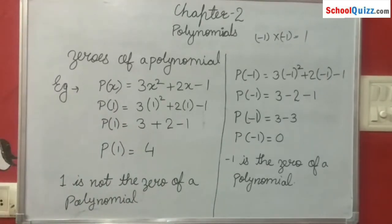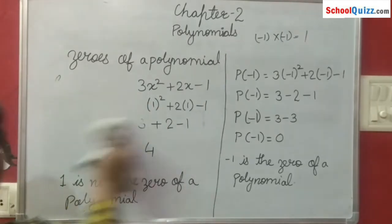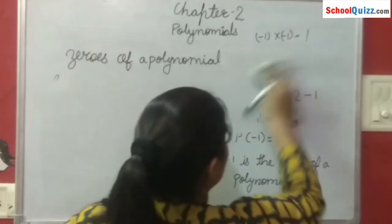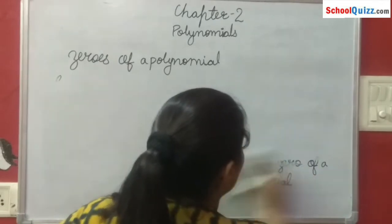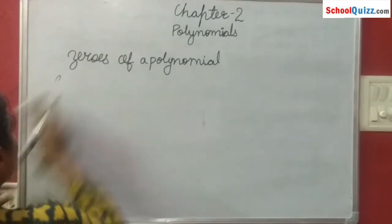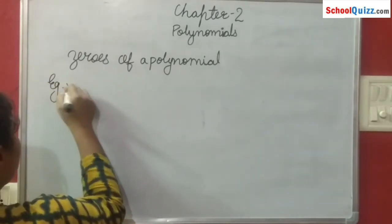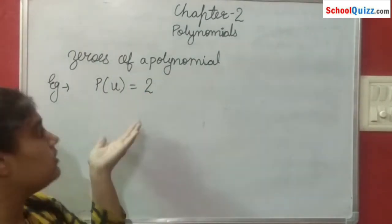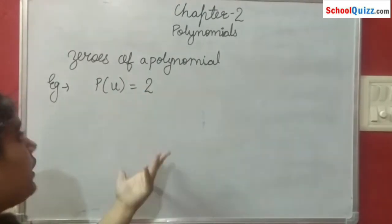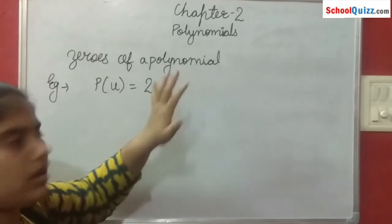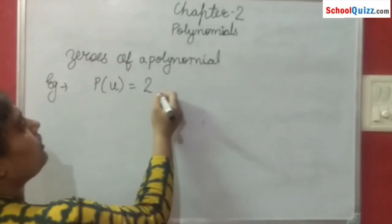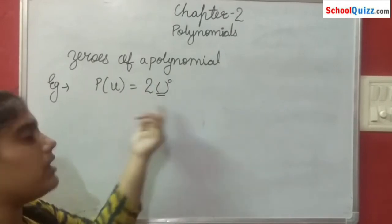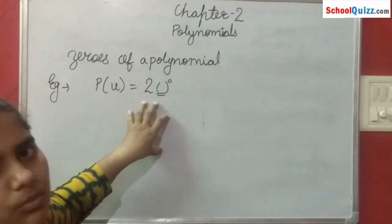Solving some other examples — now suppose we have P(u) equals to 2. Is this a polynomial? Yes, this is a polynomial — it is a constant polynomial. But there is no variable shown. If there is no variable, that means the power of whatever variable is there is 0, so the variable becomes 1 and that is why it is a constant. Here we have used the variable u, so u is associated with this constant polynomial.